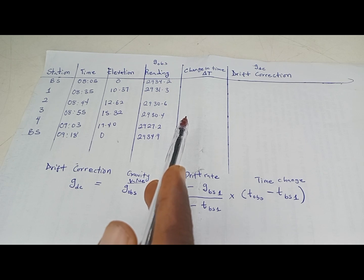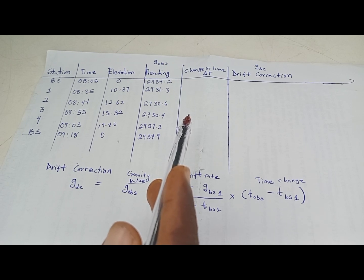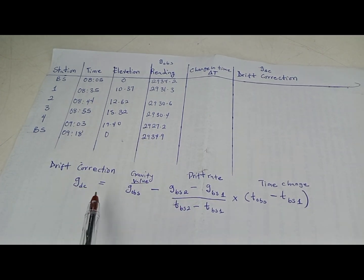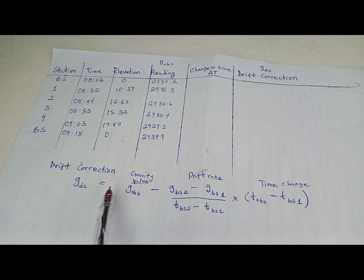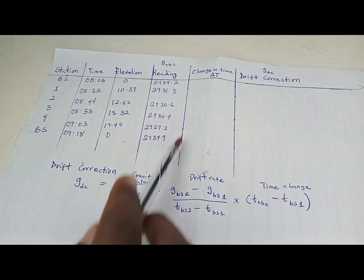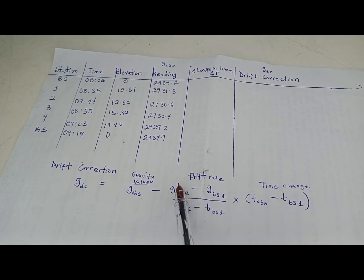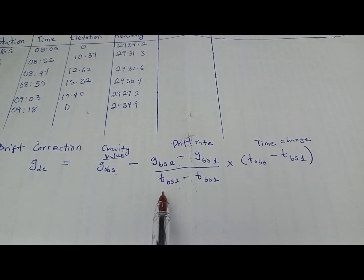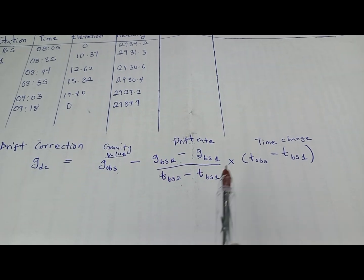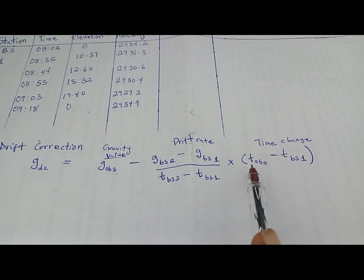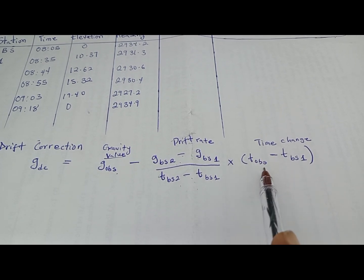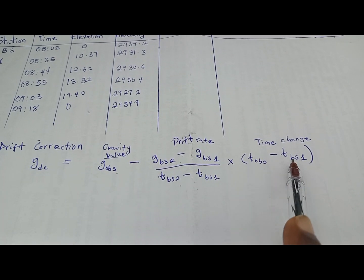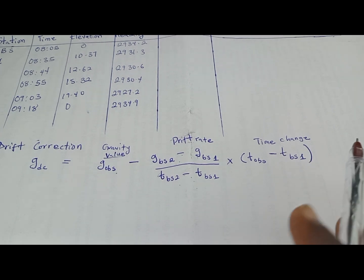We want to remove those external factors that influence our gravity readings obtained from the field. To do that, we apply our drift correction. The formula for drift correction is: GDC = G_observe minus drift rate, where drift rate equals (G_BS2 minus G_BS1) divided by (T_BS2 minus T_BS1), multiplied by the change in time — which is T_observe minus T_BS1.